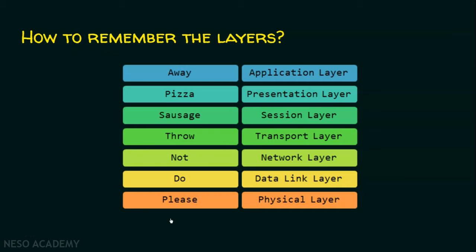Just note this sentence: 'Please do not throw sausage pizza away.' P for physical layer, D for data link layer, N for network layer, T for transport layer, S for session layer, P for presentation layer, and A for application layer. When we remember this sentence, we can easily remember the layers in the correct order.